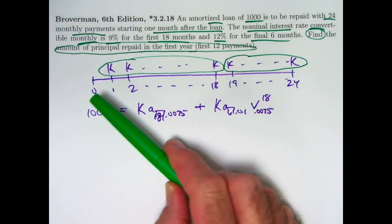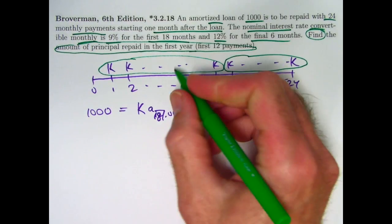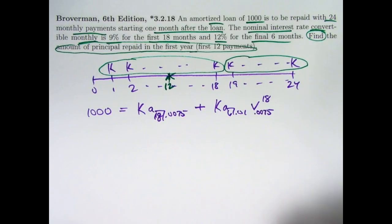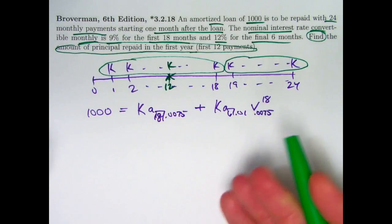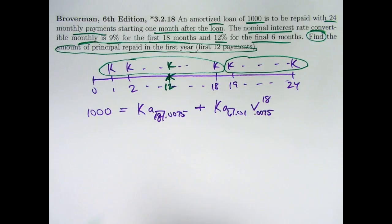If we can find the balance at time 12, either with the prospective method or the retrospective method, once we find K, that's going to help us solve the problem because the principal repaid will be the loan amount minus the outstanding balance at time 12. So let's work this out.